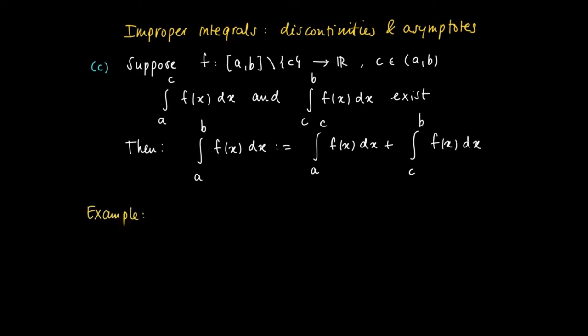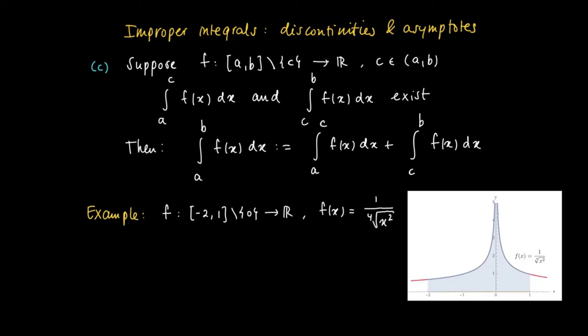Well, here's an example. Look at the function from -2 to 1, except for 0, which is given by f(x) equals 1 over x squared. Then we get a function, a graph like this. So there's a clear vertical asymptote in x equals 0.